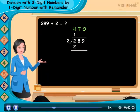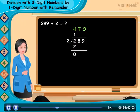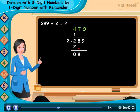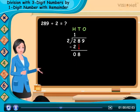And then subtract 2 minus 2 is equal to 0. Now bring 8 down from the tens place and divide 8 by 2.